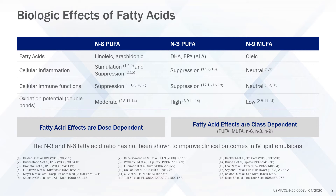Oxidation potential relates to the number of double bonds, which are molecular sites for oxidation. N9 MUFAs have low oxidation potential, while linoleic acid and arachidonic acid — N6 PUFAs — and DHA and EPA — N3 PUFAs — have moderate to high oxidation potentials.